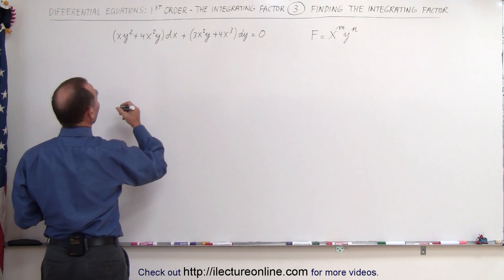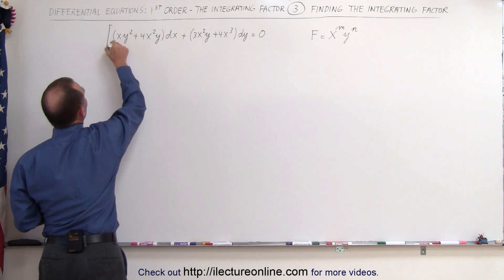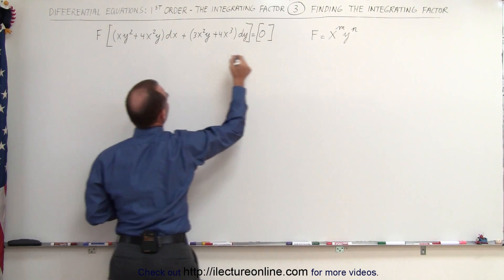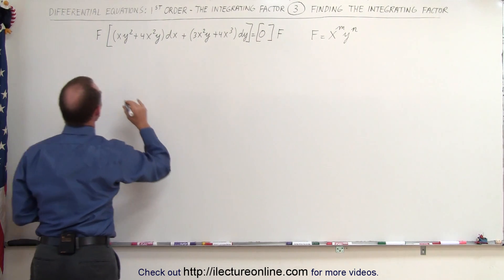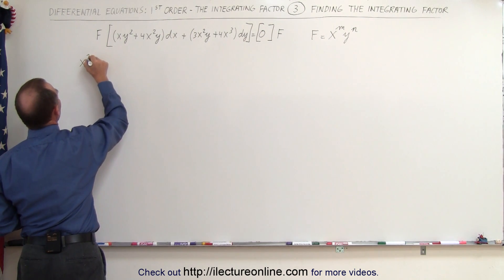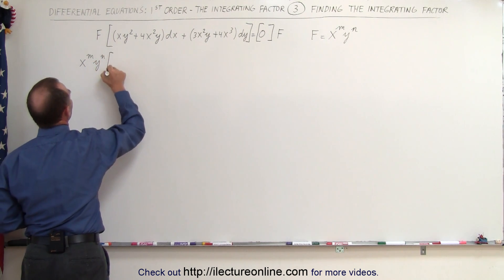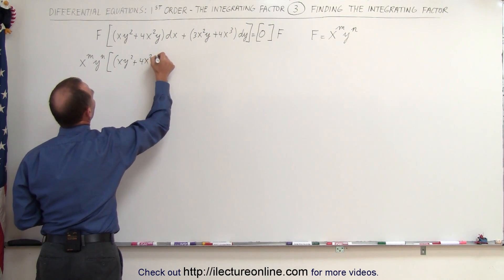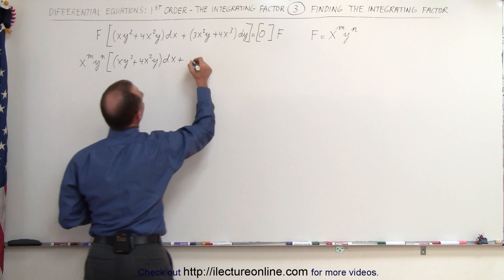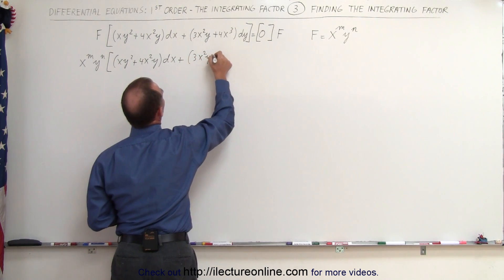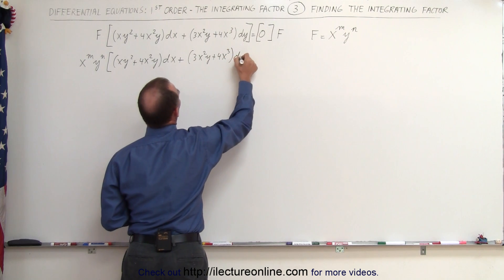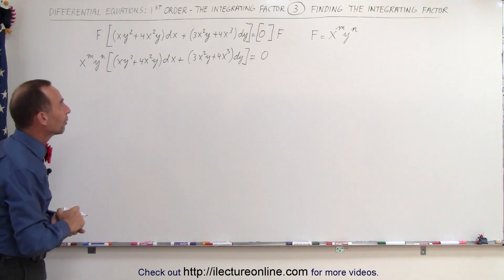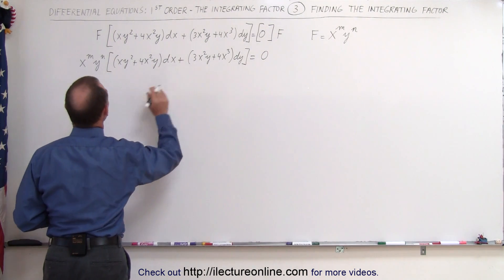We're going to multiply both sides of the equation by that integrating factor f. So we multiply the left side by x^m * y^n times the quantity (xy² + 4x²y)dx plus (3x²y + 4x³)dy. Of course the right side will still be 0 when multiplied by the integrating factor.